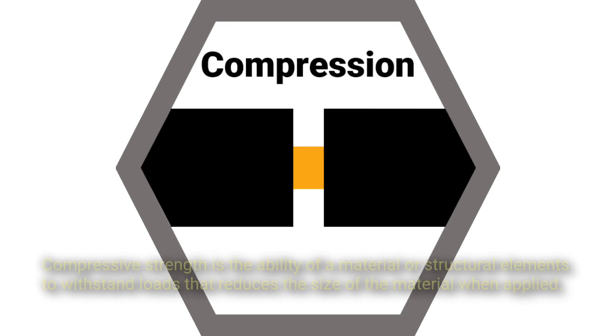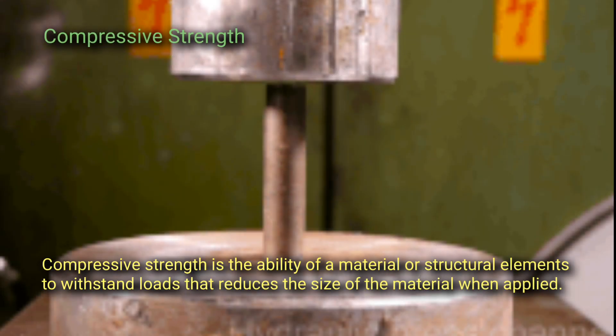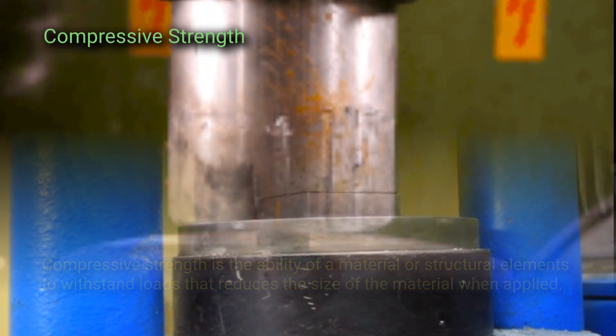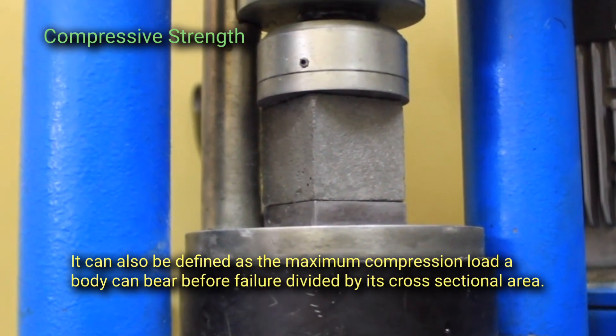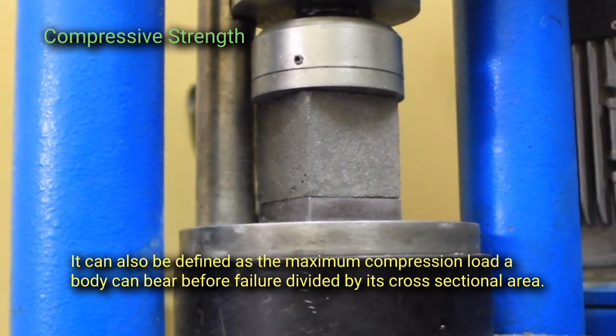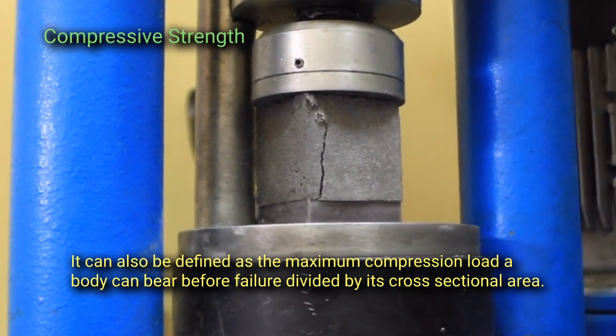Compressive strength. Compressive strength is the ability of a material or structural elements to withstand loads that reduce the size of the material when applied. It can also be defined as the maximum compression load a body can bear before failure divided by its cross-sectional area.